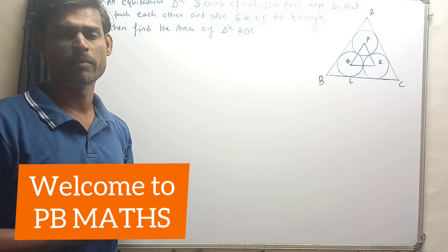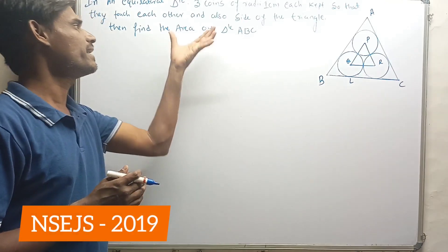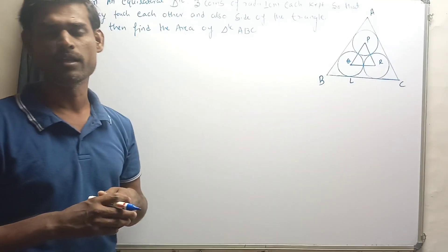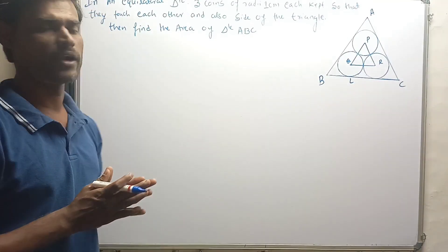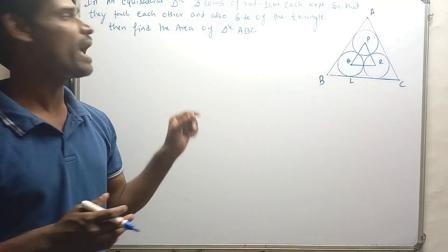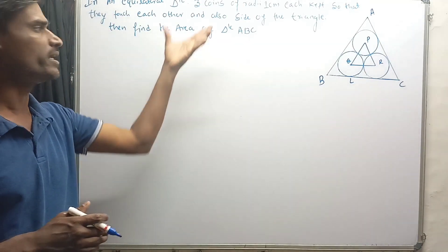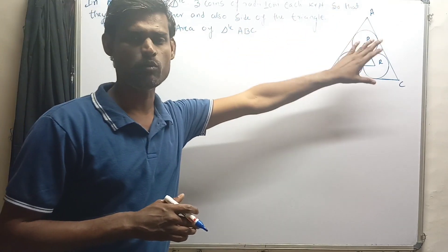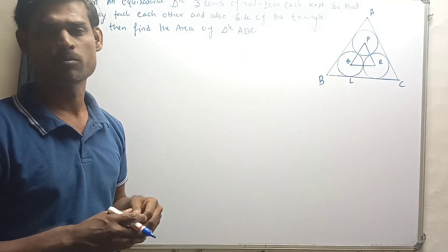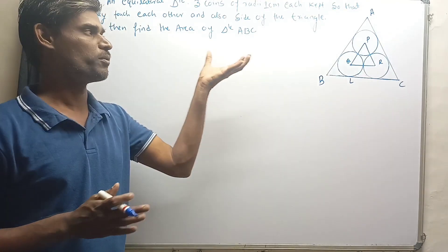Hello everyone, welcome to PB Maths. Today in this video I'm going to solve a problem from NACJS 2019. The question is: in an equilateral triangle, three coins of radii 1 centimeter are kept so that they touch each other and also the sides of the triangle ABC. We need to find the area of this equilateral triangle ABC, and I'm using the method of trigonometry to solve this problem.